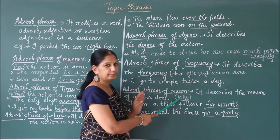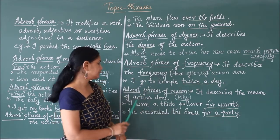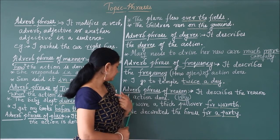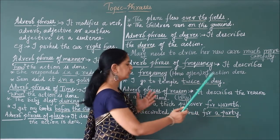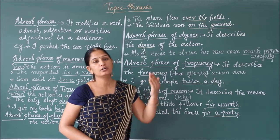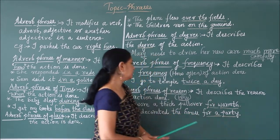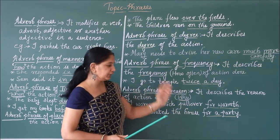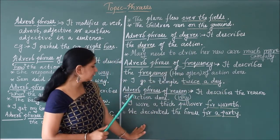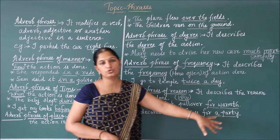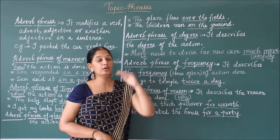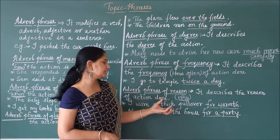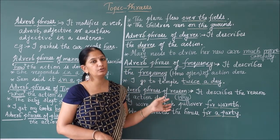Next is adverb phrase of reason — reason is related with why, so it describes the reason of the action done and answers the question of why. For example: 'I wore a thick pullover for warmth.' Why? For warmth. So 'for warmth' is the reason for the action, making it an adverb phrase of reason. Another example: 'We decorated the house for a party.' For what reason did we decorate the house? For a party. So 'for a party' is a phrase describing the reason of the action — it is an adverb phrase of reason.